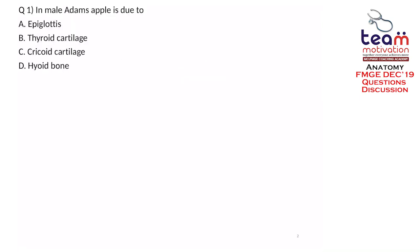The first question is: in males, Adam's apple is due to which structure? Options are epiglottis, thyroid cartilage, cricoid cartilage, and hyoid bone. Try to identify what is the Adam's apple — when we extend the neck, the most prominent midline structure you can feel is known as the Adam's apple, and it is formed due to the thyroid cartilage.